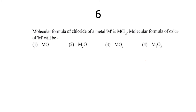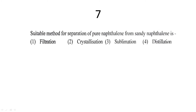The sixth question: the molecular formula of the chloride of M is MCl₂. The molecular formula of the oxide of M will be — since M has a +2 charge and oxide has a −2 charge, they cancel out, giving MO. So the first option is correct.